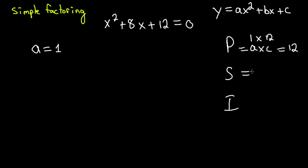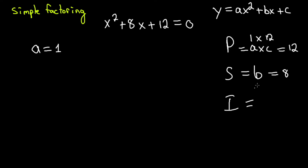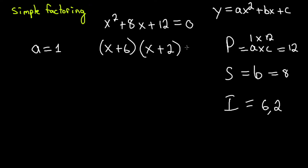S is the sum, which is just b, and b is 8 in our case. I stands for integers — two numbers that would multiply to P (12) and add together to make 8. In our case that would be 6 and 2: 6 times 2 is 12, and 6 plus 2 is 8. Therefore we complete the factoring: (x + 6)(x + 2) equals 0, and that is in factored form.